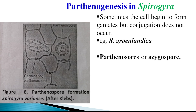Such spores produced without gametic fusion are generally called Parthenospores, which are a result of Parthenogenesis. They are also sometimes called azygospores — not zygospores — because they are not the result of zygote formation; there is no fusion or gametic involvement.